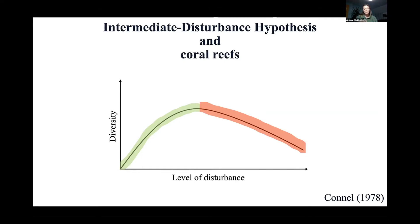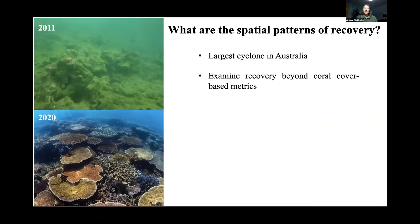What type of spatial patterns can one observe in future reefs? In this study I looked at the spatial patterns of recovery after the largest cyclone in Australia in 2011, which brought wind speeds up to 285 kilometers per hour, severely damaging the eastern sides of Polaris Reef at the Great Barrier Reef on Palm Islands. I wanted specifically to examine recovery beyond coral cover base metrics, as that's a very common way of assessing health status of the reef.